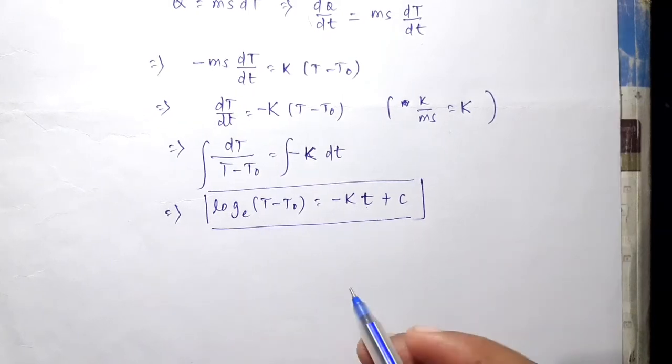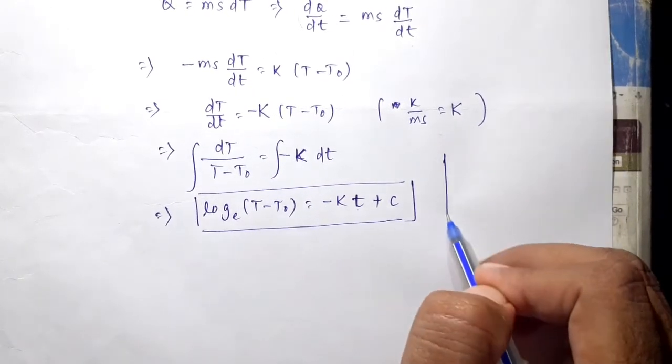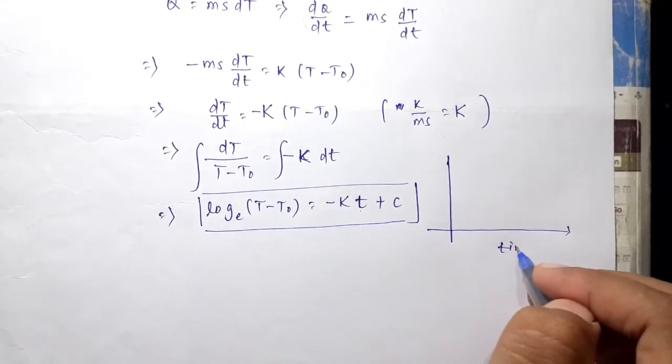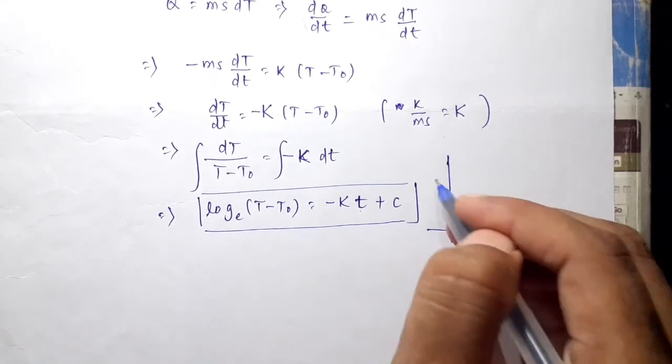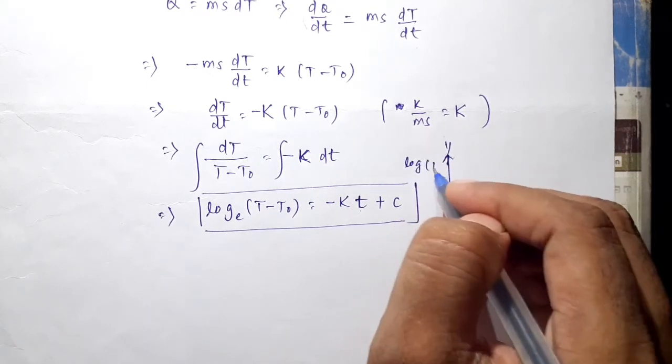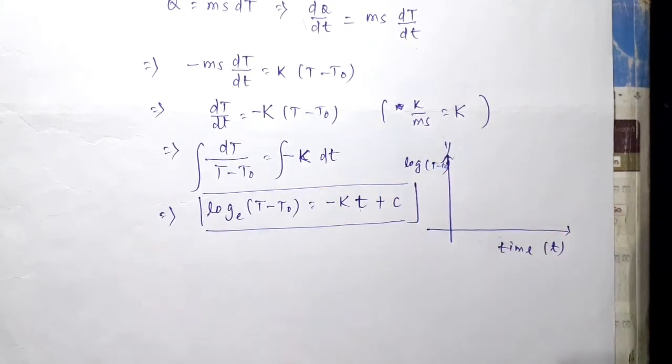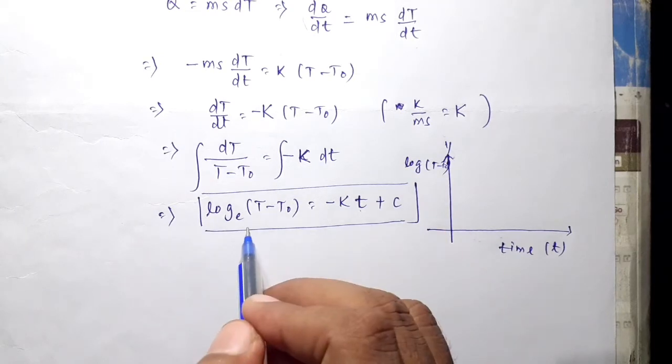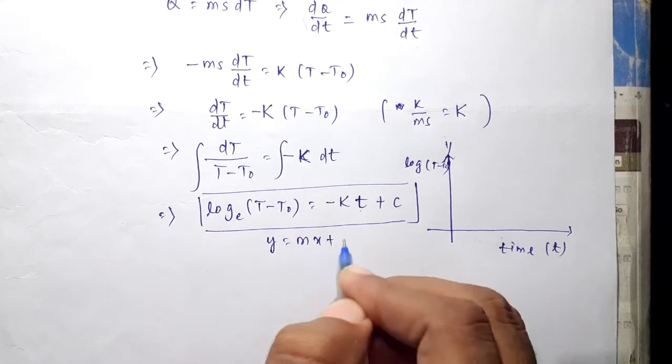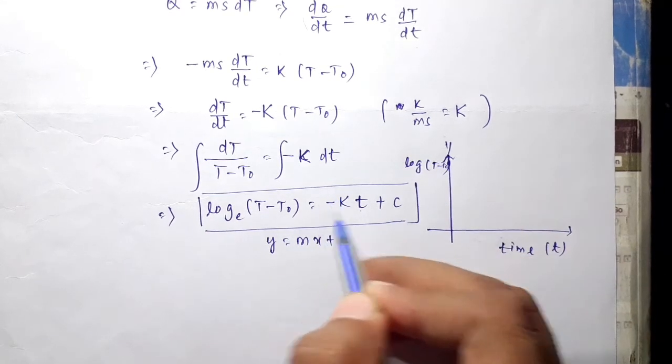Now let's make a graph according to the question. Suppose on the x-axis I'm taking time (small t) and on the y-axis I'm taking log of temperature difference. This is the equation of a straight line, y equals mx plus c. Since there's a negative sign, our straight line will be like this with slope equals minus K.